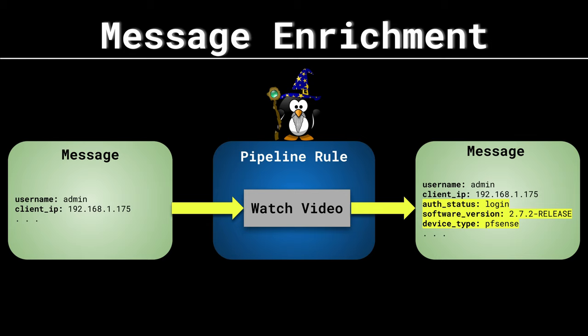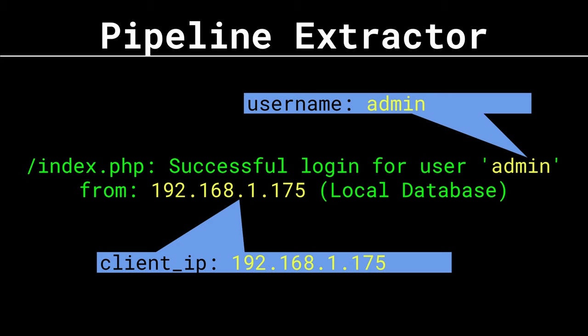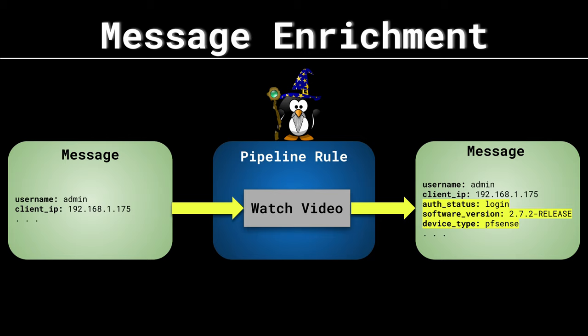Welcome back to this series on Graylog. In this video we're going to be looking at message enrichment. We already started this process in the last video on pipeline extractors where we extracted key value pairs from the original message. Some might argue that you didn't really enrich the message - you knew the username and client IP just by looking at it. So in this video we're going to look at how we can insert new data from different sources into a message, increasing our knowledge about it.